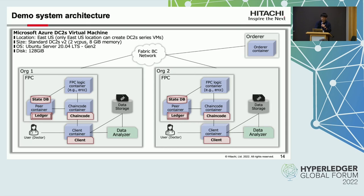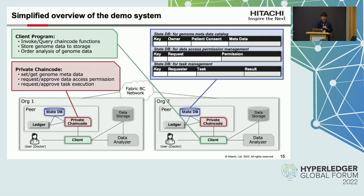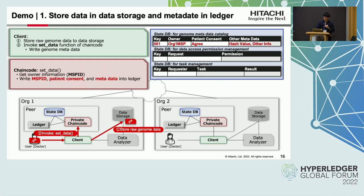The user invokes and or queries the chain code and stores genome data into storage via the client program. Here is an overview of the simplified demo system. I visualized the content of the state database in a table. First, the doctor in Organization 1 stores the genome data into data storage via the client program. Next, the client writes the genome metadata into the ledger. The metadata includes the name of the data, ownership information, patient consent information, and the hash value of the genome data.